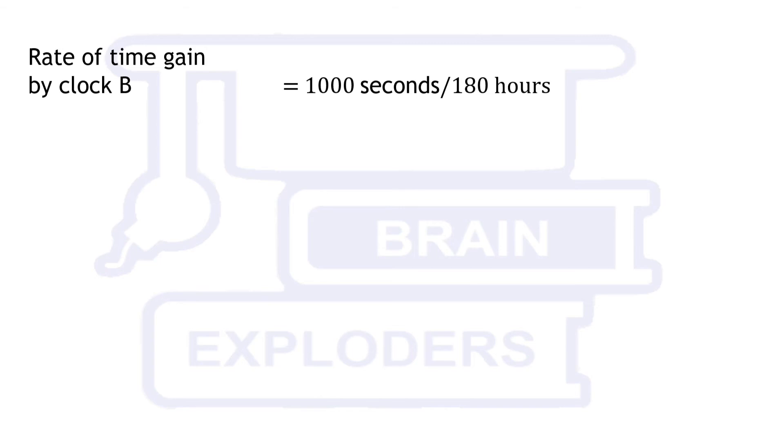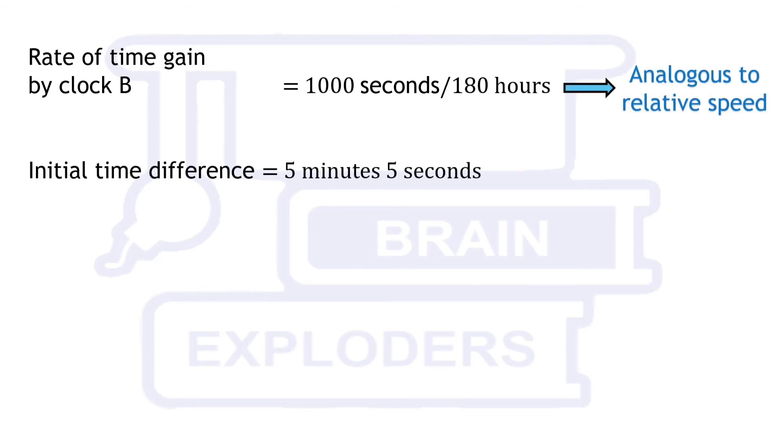Here, the rate of time gain by clock B is analogous to relative speed, and the initial time difference is analogous to initial distance.